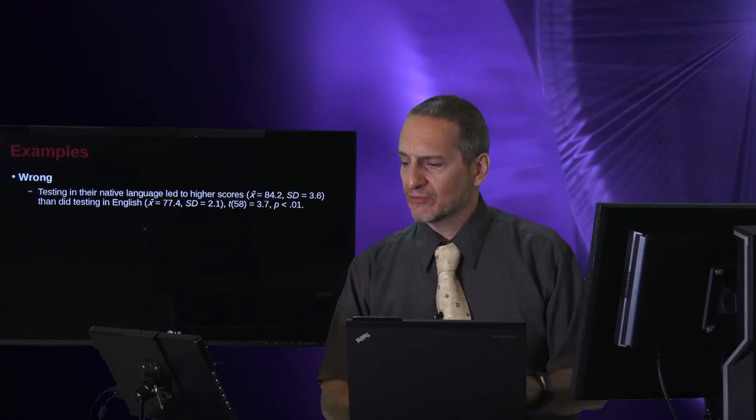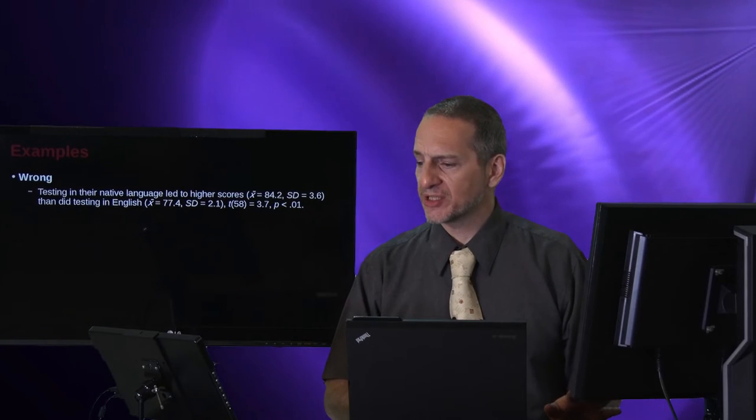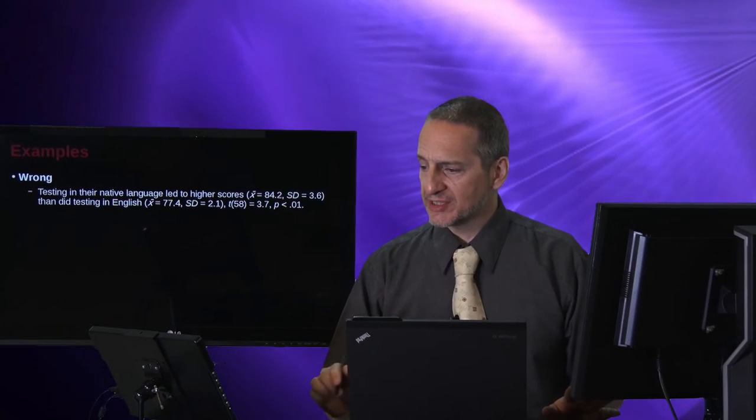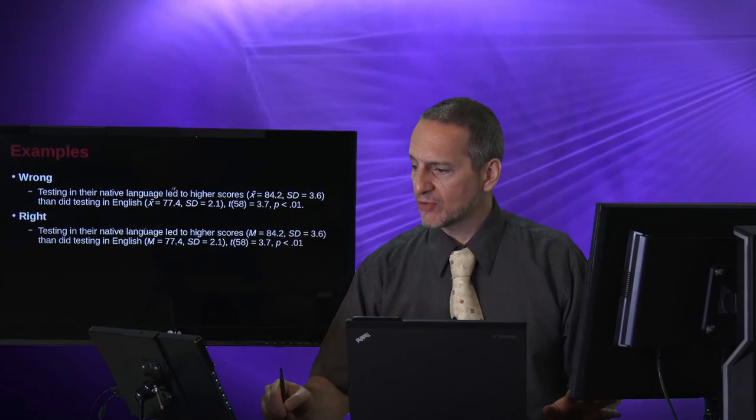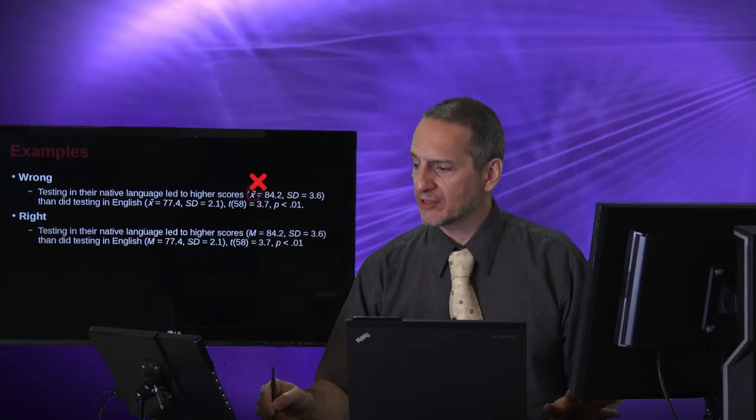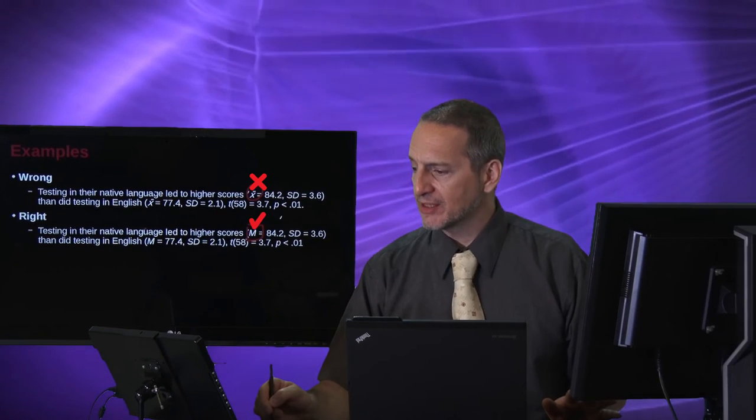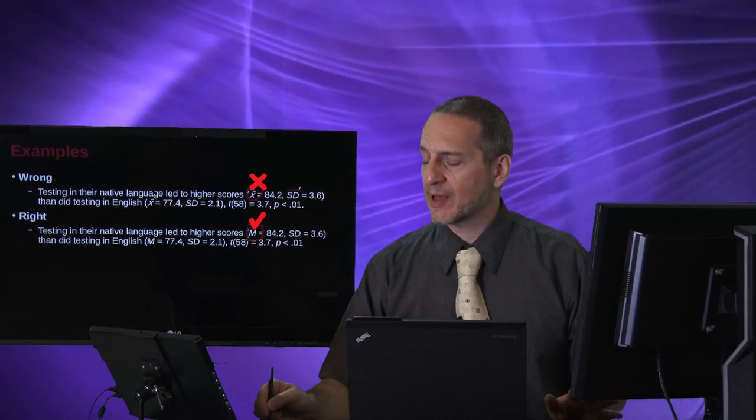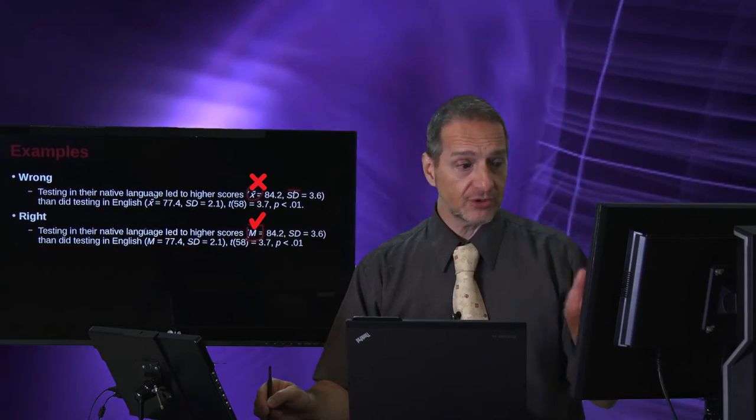Testing in their native language led to higher scores, x bar, which means mean, right? Equals 84, standard deviation 3.6. I think right away we can see some problems here. So the correct way to write this would be to avoid the x bar, the mean. We would write the capital M italicized for mean. Standard deviation you can see is capital SD with the letters angled, which makes a lot of sense.